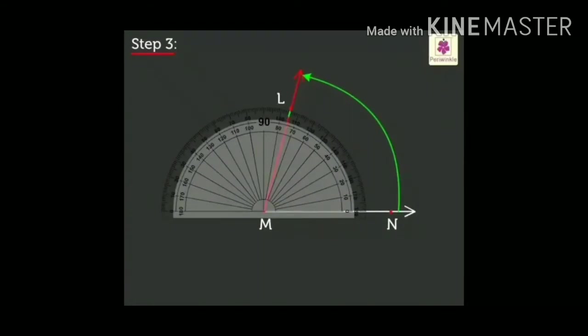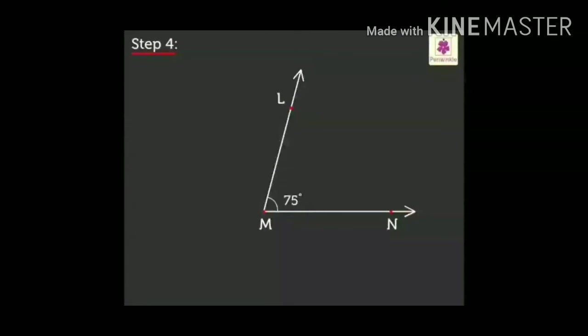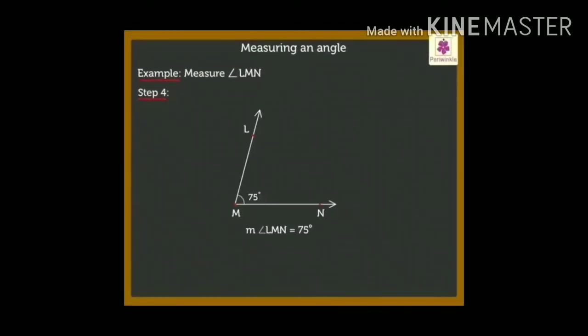start measuring towards your right side. All the protractors have two measures. So, from the baseline towards the right side. Here you can see it is 75 degree. Mark the point there, 75 degree. Therefore, we find that LMN forms 75 degree angle.